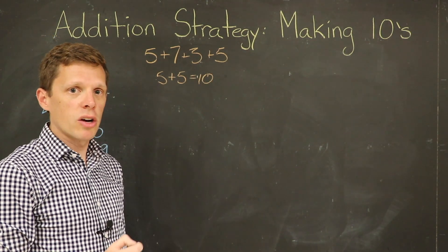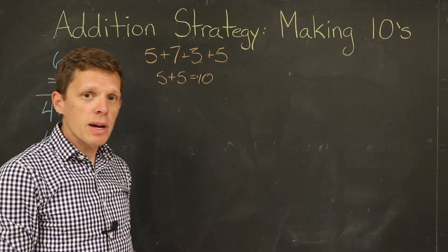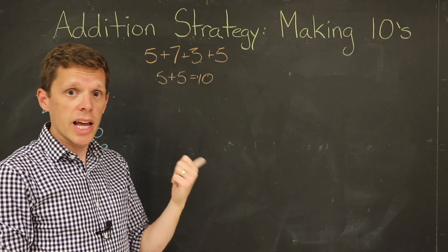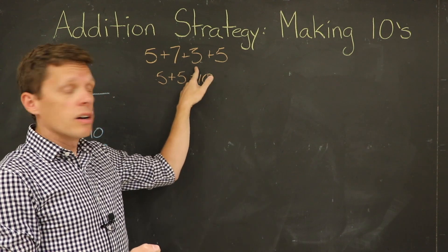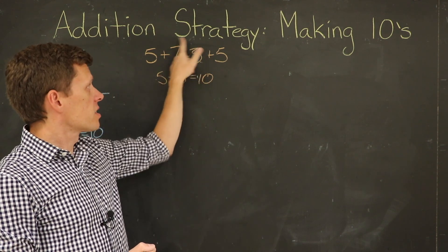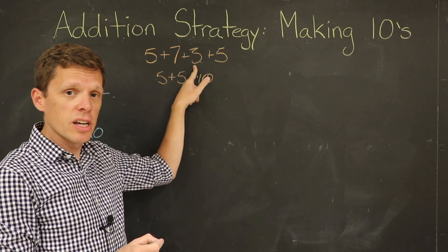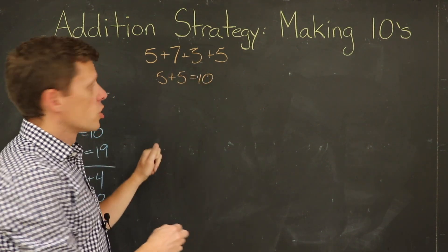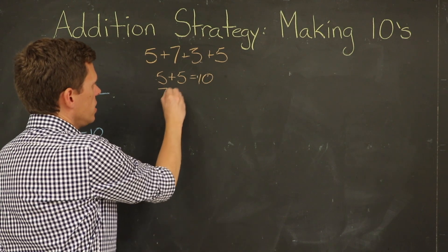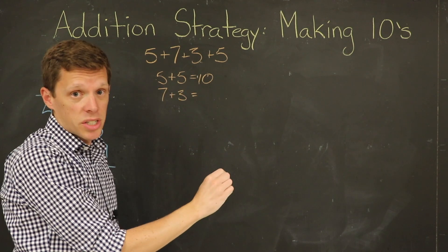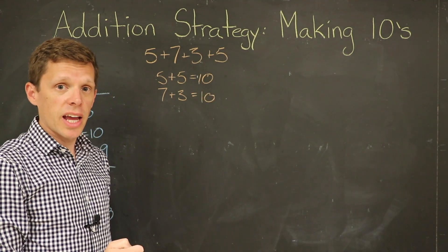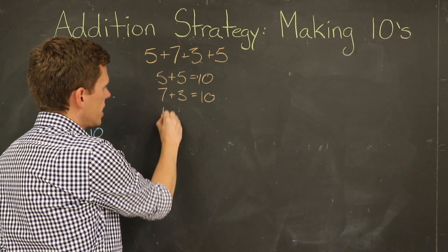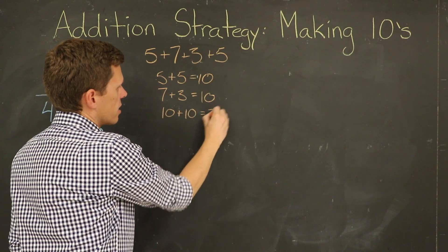You might also see right away that seven and three is ten — that might be a known fact. If it's not, you might start at seven and count on three: eight, nine, ten. What you want is for this to become a known fact — to see seven and three and immediately know they make ten. So seven plus three equals ten. Our final step is to add the ten and the ten together: ten plus ten equals twenty.